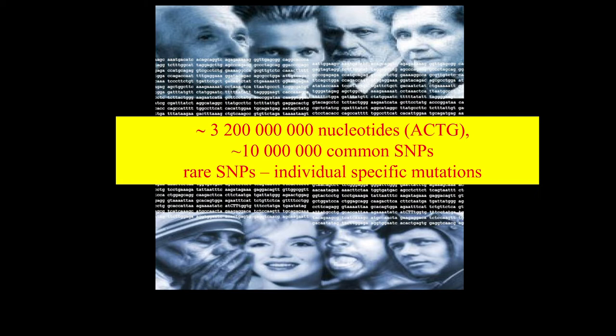We have around 3.2 billion of these letters in our chromosomes. Among these nucleotides, there are around 10 million common variants — single nucleotide polymorphisms — meaning a single base pair, for example a T, is T in some chromosomes and another letter in others. There are also rare SNPs, individual-specific mutations. If you sequenced all individuals in the whole world, probably most nucleotides have somebody somewhere with a different letter.